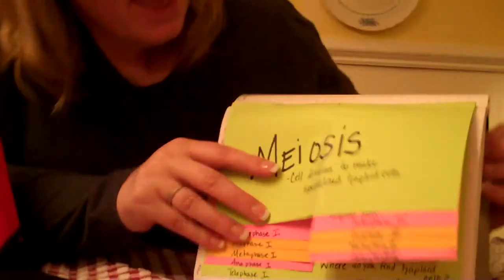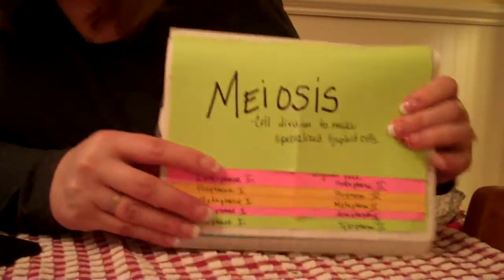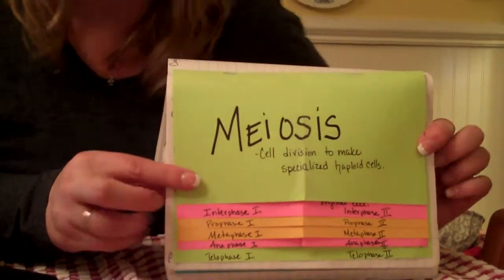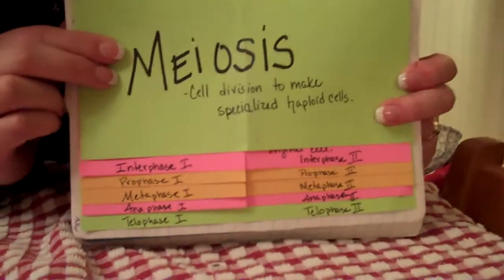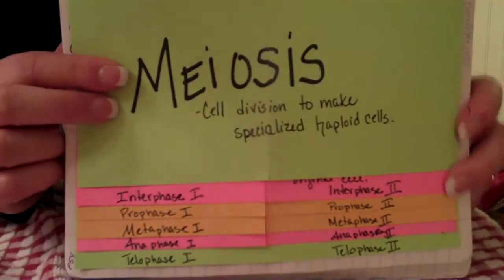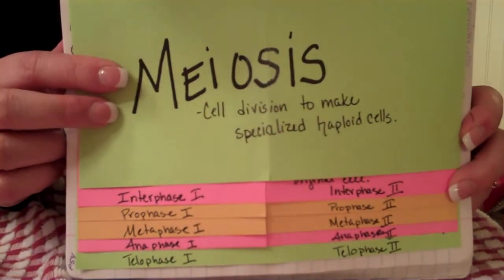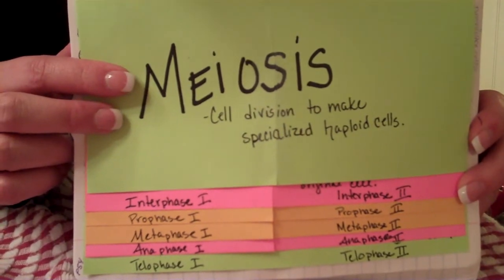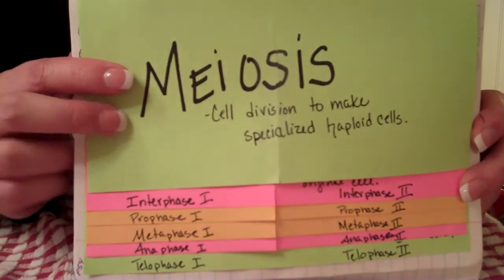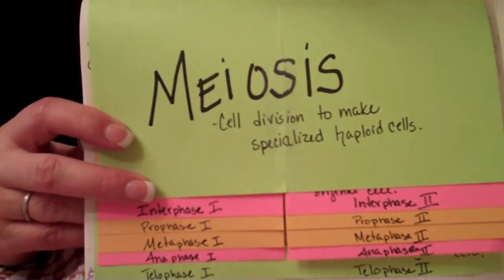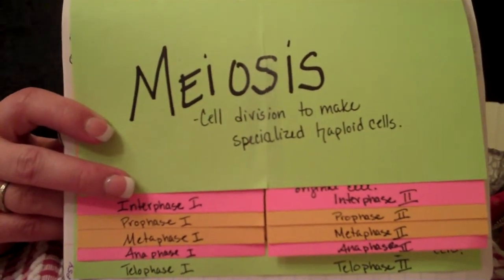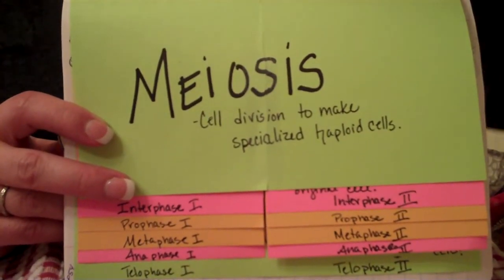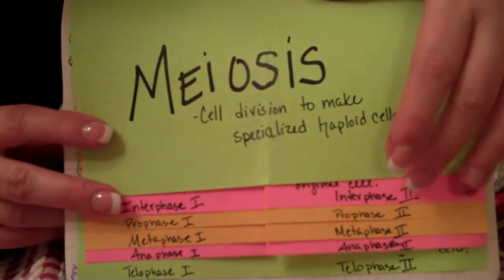The first thing is we're going to look at your foldable. We're going to try to make sure you can read it. You should have written on the front: meiosis, cell division to make specialized haploid cells. We're going to find out by the time we're done what haploid means, and if I don't remember to tell you, Emily, who's doing the video for me, is going to have to remind you.